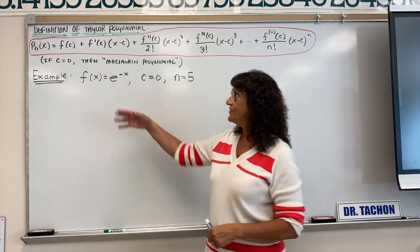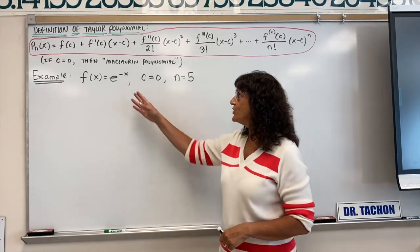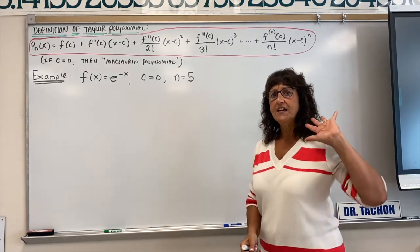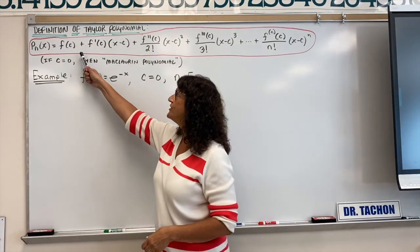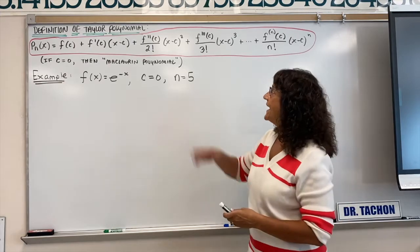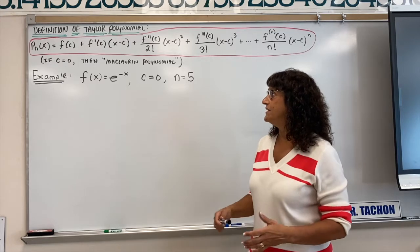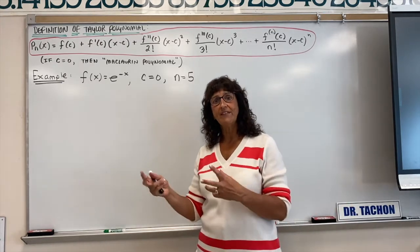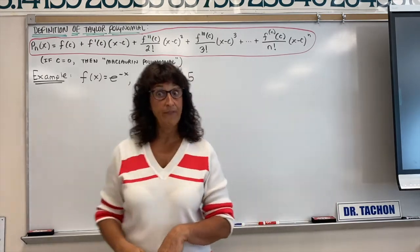So let's look at our example today. We are going to take e to the negative x, set it at zero, and go out to the fifth derivative. Here's the polynomial expansion where you're going to utilize the function, the derivatives, where it's centered, and factorials. There are a lot of pieces to this formula. We're going to write e to the negative x as a series of polynomials, going out to the fifth derivative.